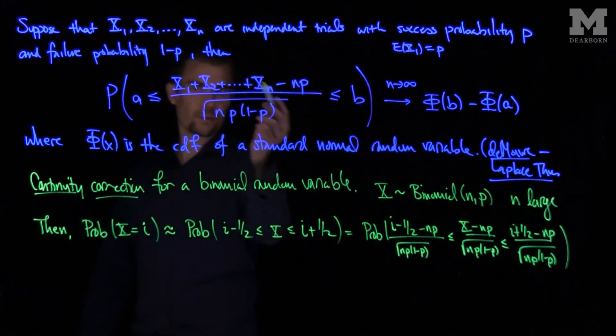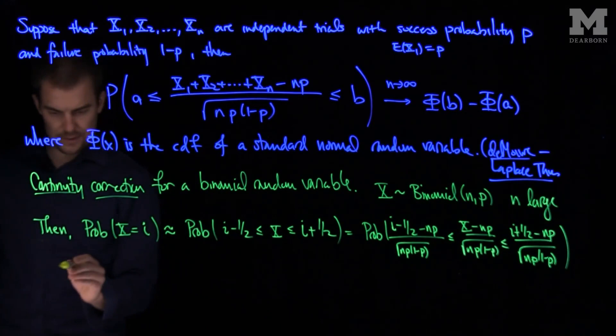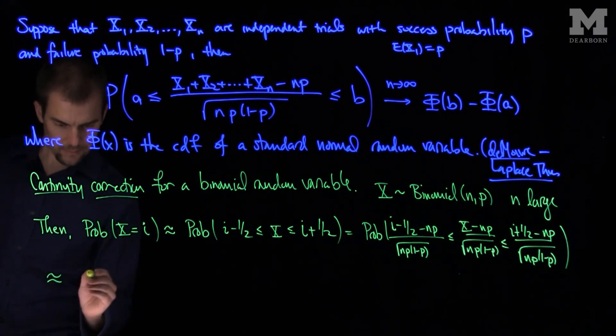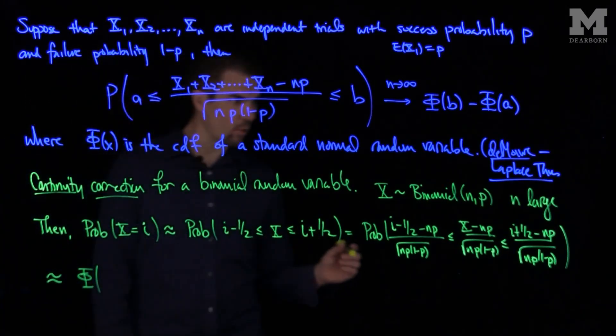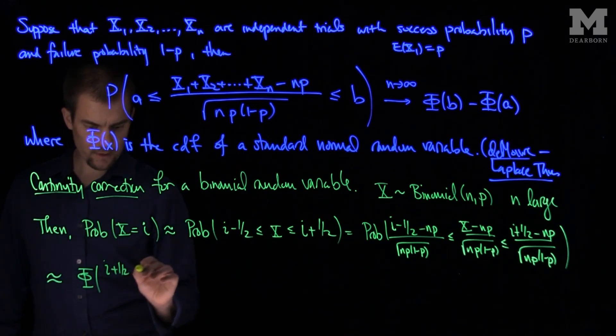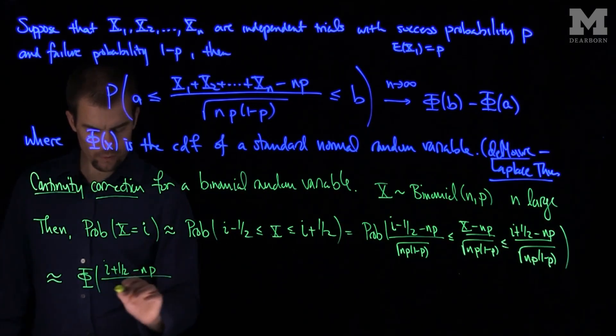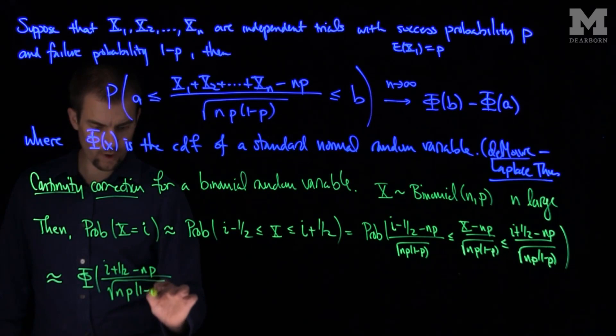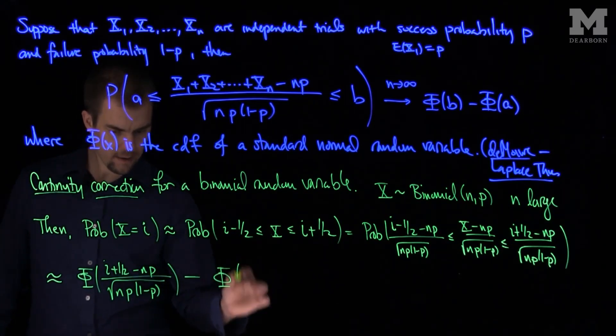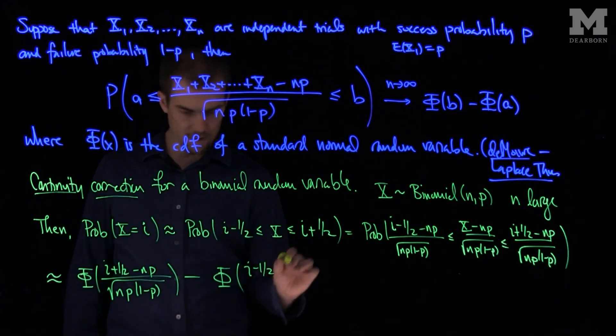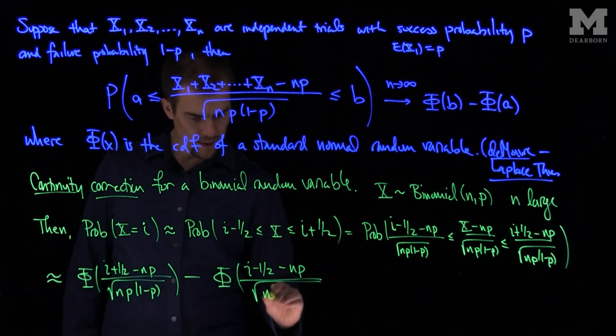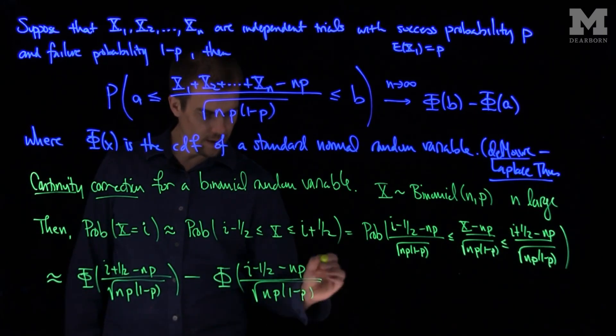And now this de Moivre-Laplace theorem tells me that this is approximately phi of the top limit, which will be i plus one-half minus np over the square root of np times 1 minus p, minus phi of i minus one-half minus np over the square root of np times 1 minus p.